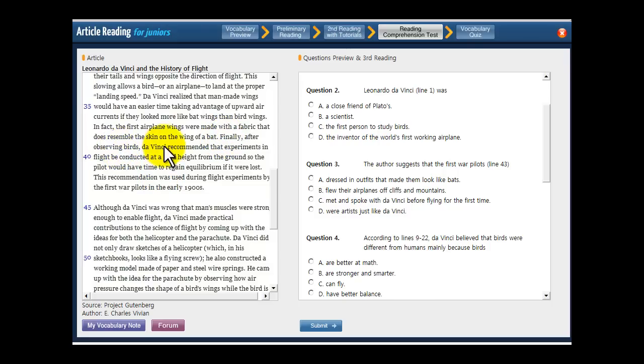So start on line 39. Finally, after observing birds, da Vinci recommended that experiments in flight be conducted at a good height from the ground so the pilot would have time to regain equilibrium if it were lost. This recommendation was used during flight experiments by the first war pilots in the early 1900s. So it's saying that the experiments in flight should be done at a good height from the ground, which means when they experiment with flying they start off high, like from a cliff or something, and then fly off it so that they won't just immediately hit the ground. They can have time to control their flight as they are going. So you're gonna look for something that says they flew off of high level things.